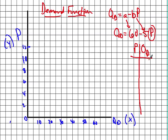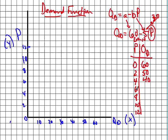We have price and quantity demanded on our axes. The easiest approach when plotting a line is to find the intercepts. If the price is zero, we know the quantity demanded is 60. At a price of $2, we plug in 2: 5 times 2 is 10, so 60 minus 10 gives us 50. At a price of $4, 5 times 4 is 20, so 60 minus 20 is 40. Continuing with prices of $6, $8, $10, and $12, plugging each into 60 minus 5p gives us 30, 20, 10, and zero.